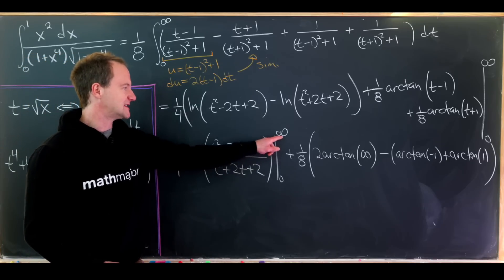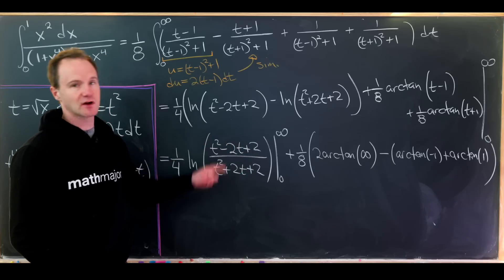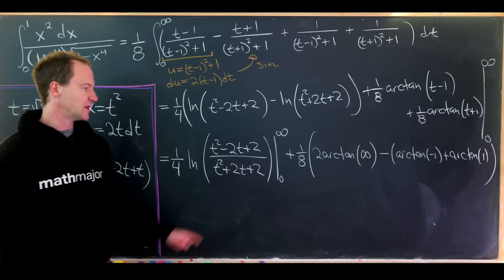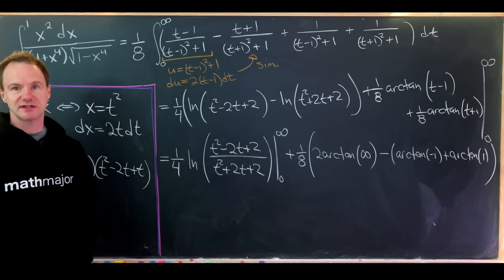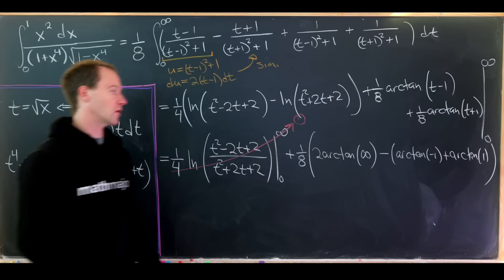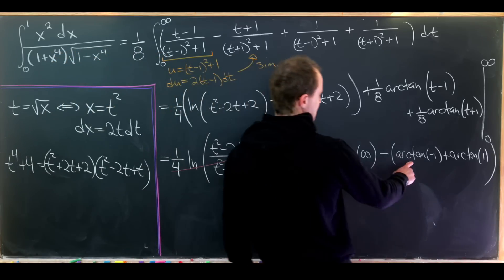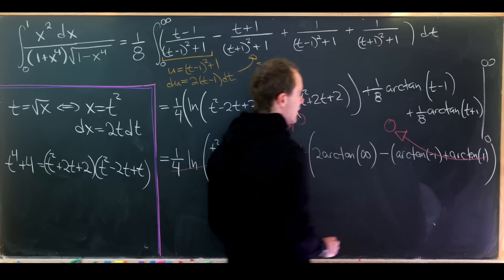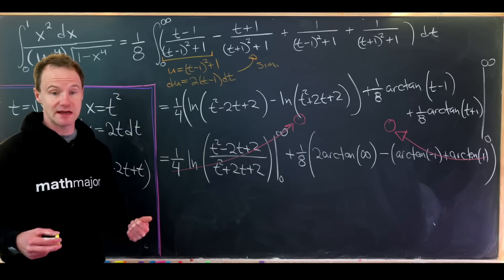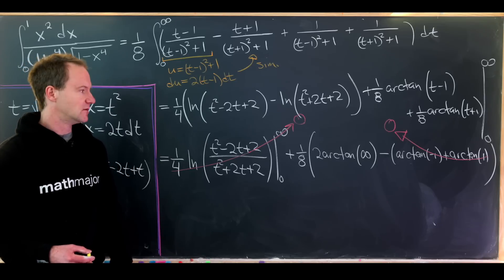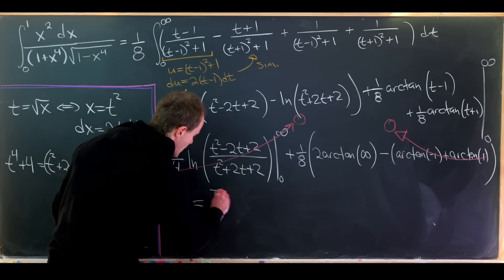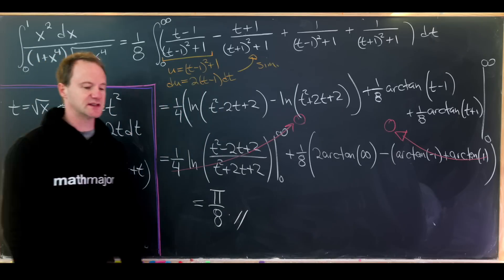As t approaches infinity, the rational function inside the log approaches 1, so the log term gives 0. Plugging in t equals 0 also gives natural log of 1, which is 0. Since arctangent is an odd function, arctan of minus 1 plus arctan of 1 equals 0, so the boundary terms at 0 cancel. We're left with one eighth times 2 times arctan of infinity, which equals one eighth times 2 times pi over 2, giving pi over 8 as the final answer.